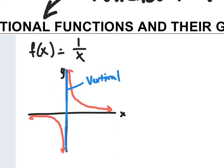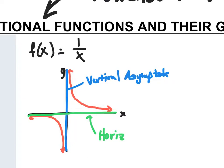What that means is that the graph on either side will approach the y-axis but never touch — it'll get infinitely close, but it will never touch. The other thing that we have on this graph is a horizontal asymptote.